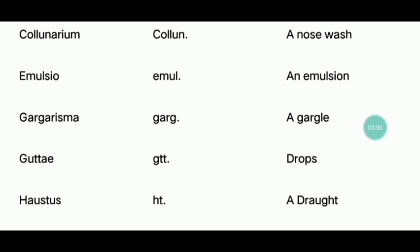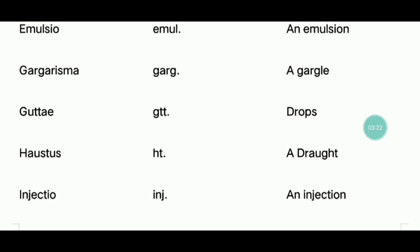Emulsion — an emulsion preparation. Gargale — gargle — used to treat throat infection. When you use it for a throat infection, you take it for the throat. This is Gargle.